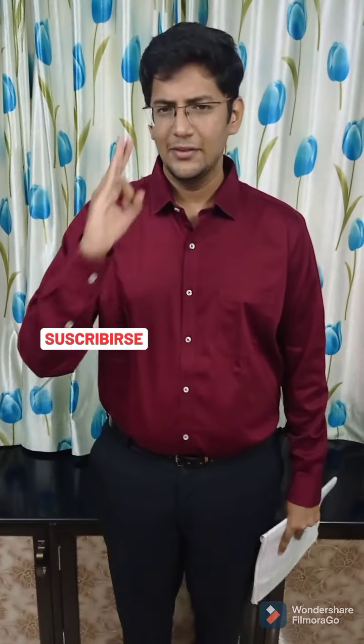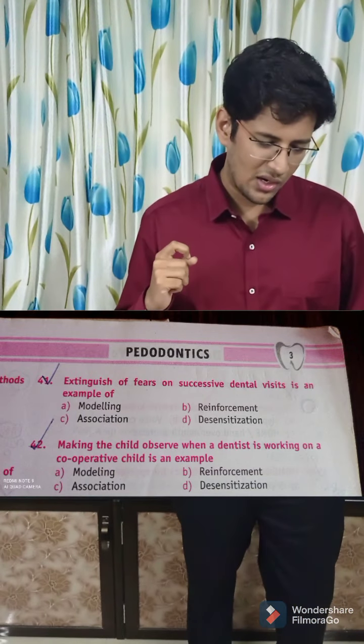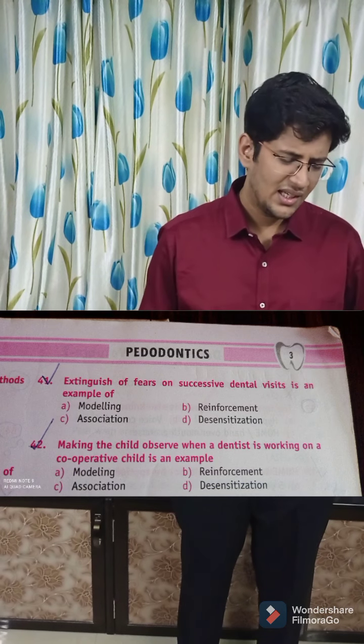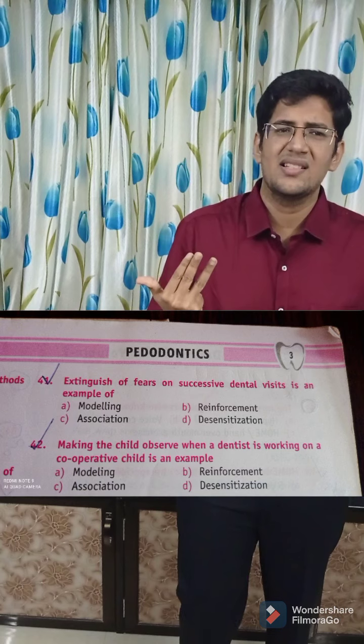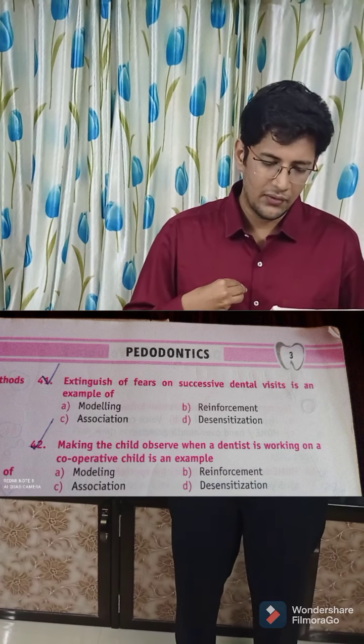Hope this is useful for you. Please do like and subscribe. The third point is understanding an MCQ. We tend to make mistakes — we are so much in a hurry to find the answers to multiple choice questions instead of understanding those MCQs. For example, as you can see on your screen, this MCQ reads: 'Extinguishing of fear on successful dental visits is an example of.' The options are modeling, reinforcement, association, and desensitization. If you know the answer right away, your concepts are clear. If you are getting confused in the options, that means your concept is weak.